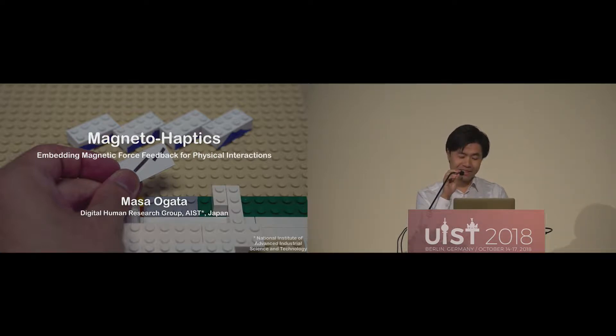I'm Masao Gata from Japan, EIST. This project, Magneto-Haptics, is a challenging and novel approach to estimate and create haptic sensation only using permanent magnet.